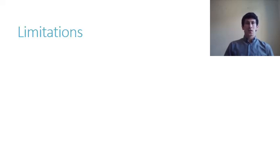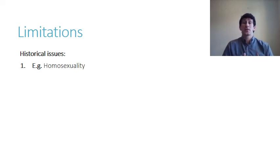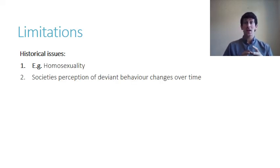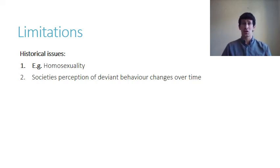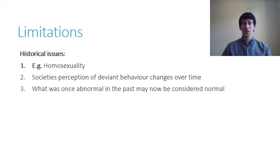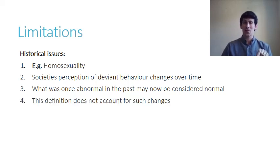So we're going to look at the weaknesses of this definition. One of the main weaknesses is the idea of historical issues. If we look at homosexuality — in the past it may have been dealt with by someone being put in jail or even put to death, because it was seen as socially deviant. However, perceptions change over time. Now it's considered completely normal; people can get married and have civil ceremonies, whereas in the past it was considered abnormal. This definition can't really account for the fact that our perception of behavior changes over time — so it ignores historical issues.